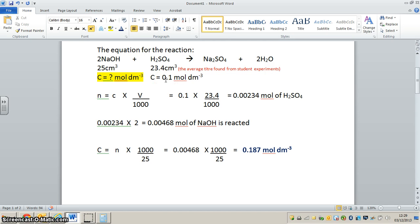There is one last part to this experiment: to work out what this is in actual grams per dm³. This is a very simple calculation. All we need to do is multiply the number of moles by the relative molecular mass. Let's quickly do that.